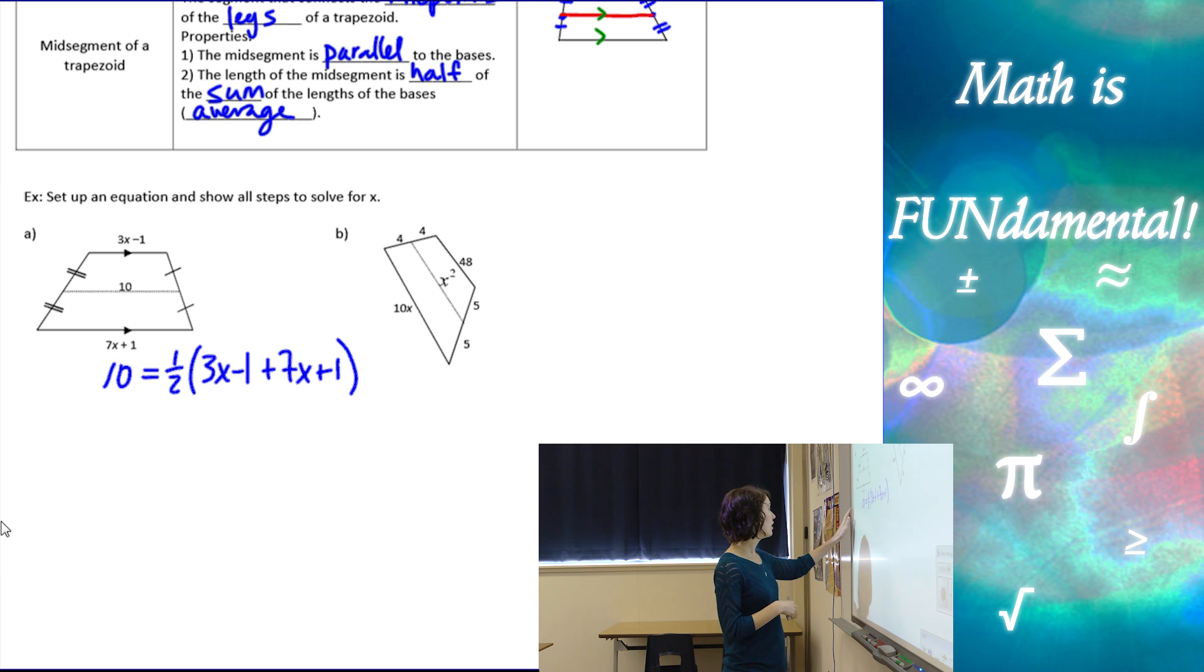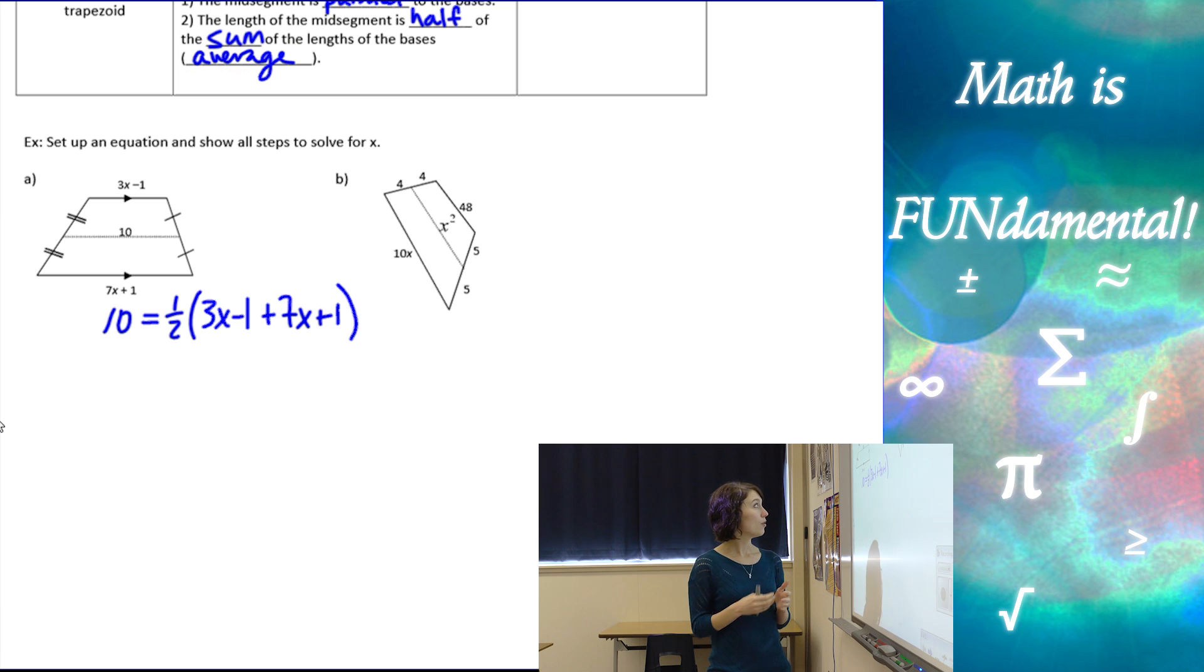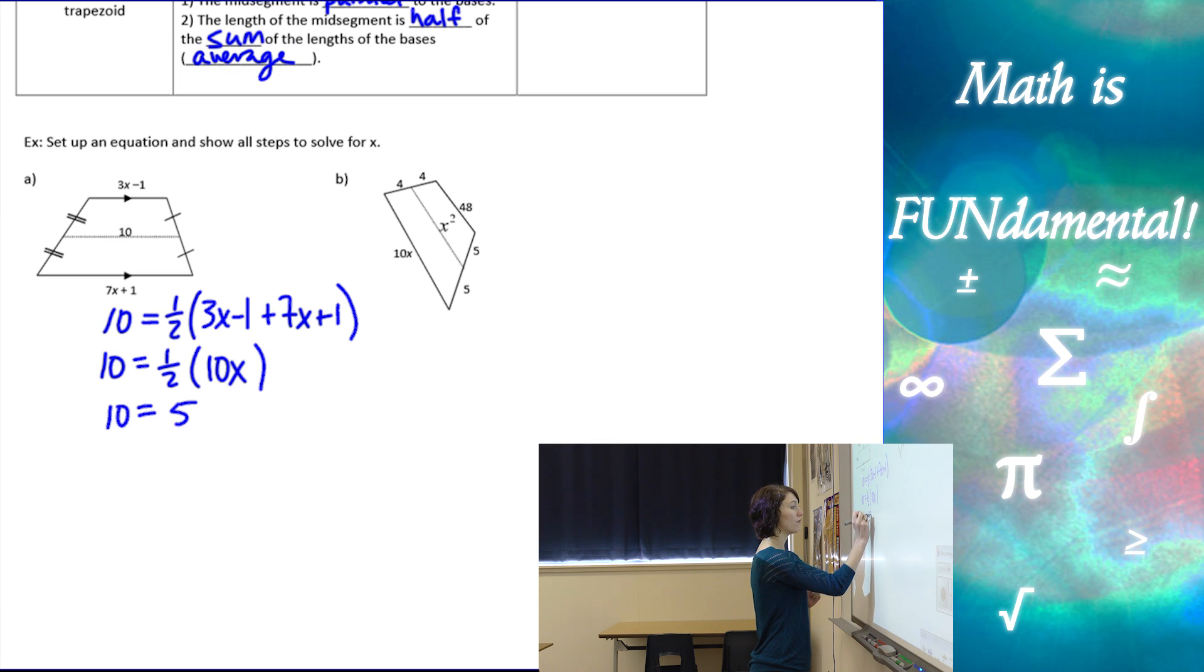So, a little bit of a complicated formula. Now, we could, if we wanted to, we could do a whole bunch of stuff at this point. My suggestion, simplify what's inside the parentheses first. So, 10 equals one half, 3x plus 7x is 10x, negative 1 plus 1 actually cancels itself out. So that was kind of nice. And then at this point, we could distribute the one half in, or multiply one half times 10x, we get 10 equals 5x, and divide by 5, and x is going to be 2.